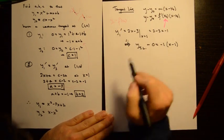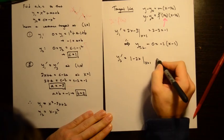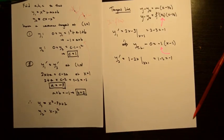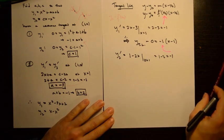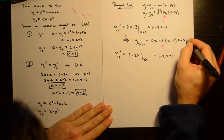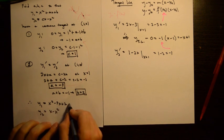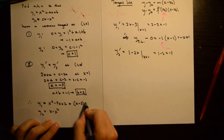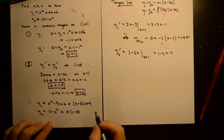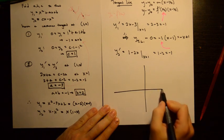We could also use y2' = 1 - 2x, evaluated at x = 1: 1 - 2 = -1, which is the same slope. So our tangent line is y = -x + 1. For sketching, y1 = x² - 3x + 2 factors as (x - 2)(x - 1), with roots at 1 and 2. And y2 = x - x² factors as x(1 - x), with roots at 0 and 1.